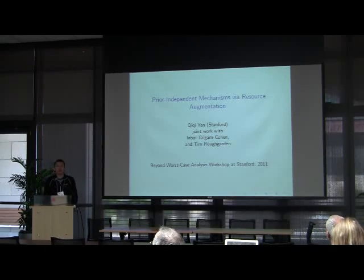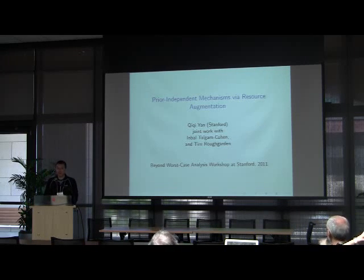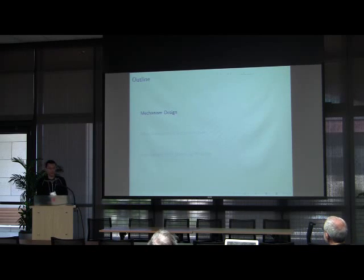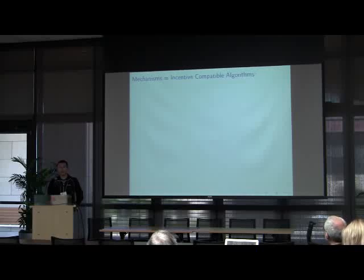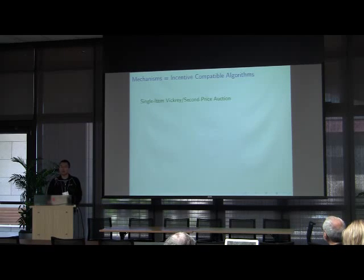I'm going to talk about prior independent mechanisms, and this is joint work with Ingbao Taugam from Stanford and Tim. So what is a mechanism? A mechanism is basically an algorithm that's incentive compatible. Let's take the single item Vickrey auction as an example, which is also called the second price auction.